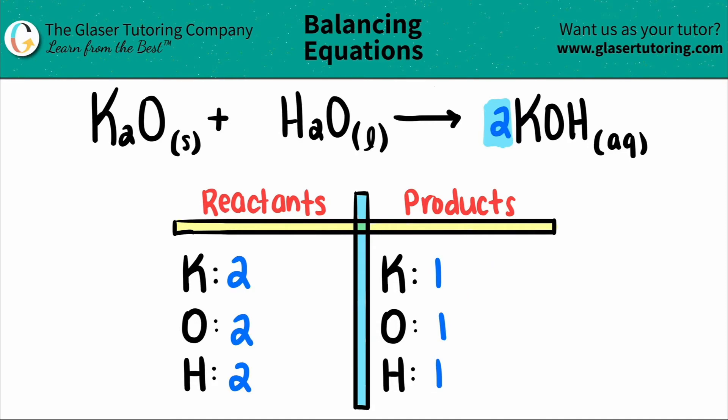But when you add a coefficient to a compound, you have to be fair and it gets distributed between all of those elements. So just like we said that we had two potassium, two times one oxygen I now have two oxygens, and I also have two hydrogens.